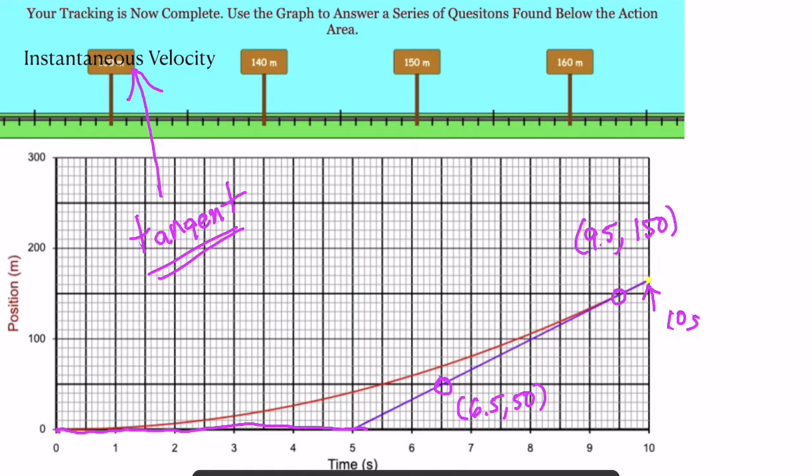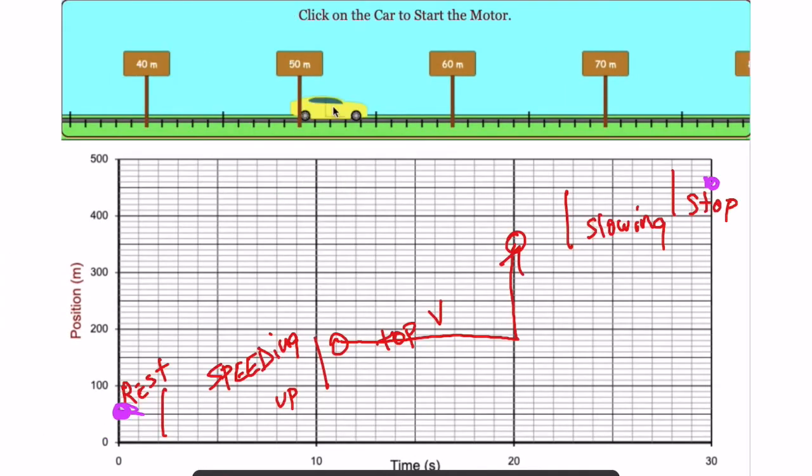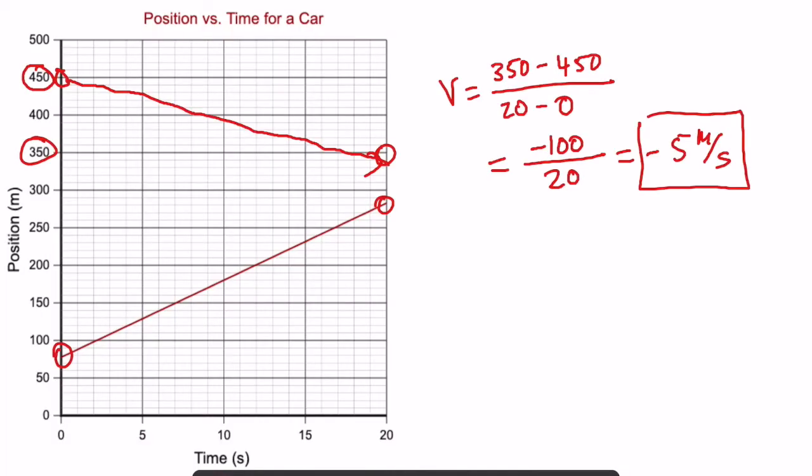Okay, so to summarize, whenever you use the endpoints, you get the average. Whenever you find the slope of a particular spot, you're getting the instantaneous. If the object stays at a steady speed for the whole time, or even just a portion of it, that instantaneous speed will stay the same for that entire section.